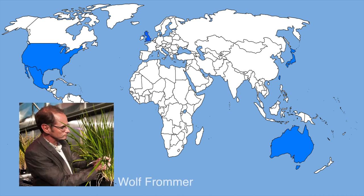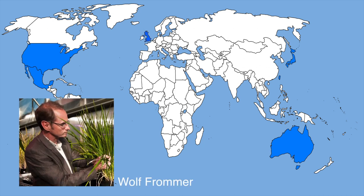Wolf Frommer, director of Carnegie's plant biology department, has worked with an international team of leading plant biologists from Australia, Japan, Mexico, Taiwan, the U.S., and the U.K. on research that collectively could have a profound impact on global agriculture.